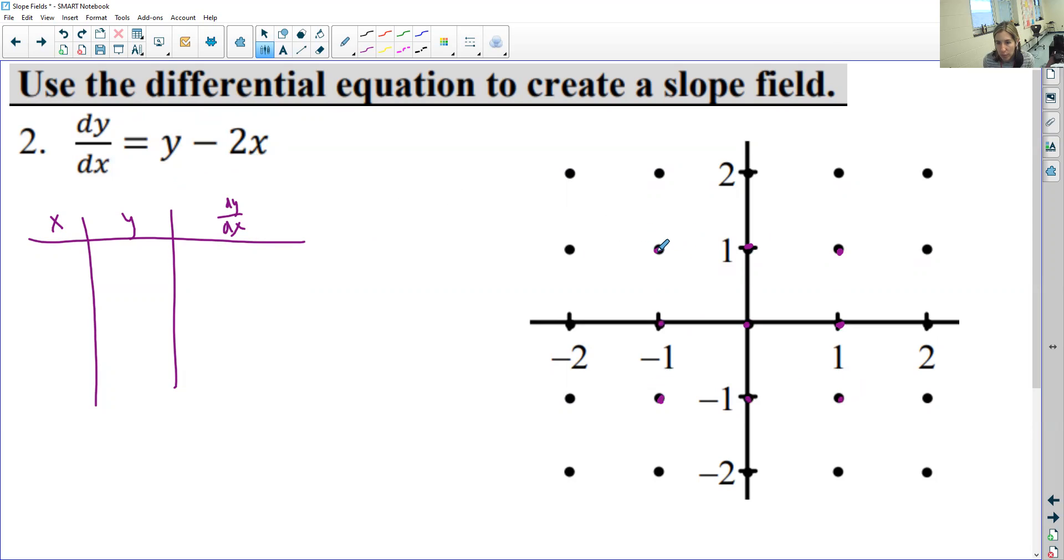So this is the point negative 1, 1, and then just plug that into the equation. So 1 minus 2 times negative 1, which ended up being 3. So this slope is 3.